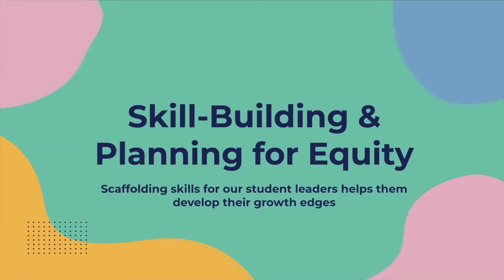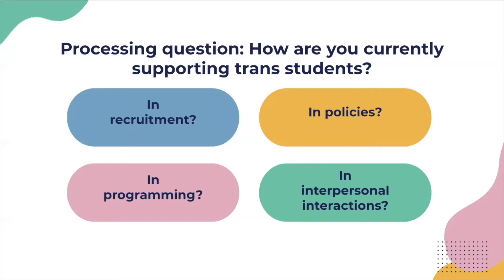Next, we're going to talk about skill building and planning for equity — some capacities and skills you can help your student leaders develop. First, think about how you are currently supporting trans students — through recruitment, programming, policies, and interpersonal interactions. From start to finish: when recruiting new members and marketing events, how are they putting on programs and events that are inclusive for everyone? How do their policies reflect this? And how are trans students in your organizations and on your campus currently feeling supported — or not — in any of these aspects?